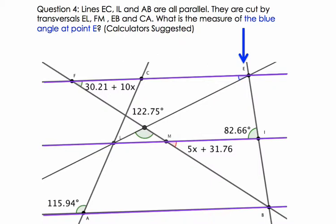They're cut by transversals EL, so we're going to find EL. Here's the point E again in L, so this red line is one transversal. F, M, that's this line. See, point M's here, but the line F, M keeps going past that.